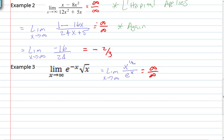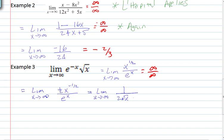So we can apply L'Hopital. This equals the limit as x approaches infinity of the derivative of x to the 1/2, which is 1/2 x to the negative 1/2, divided by e to the x. Rewriting to remove negative exponents: this is 1 over 2 times the square root of x times e to the x — that's 1 over infinity, and we already know that limit is 0.